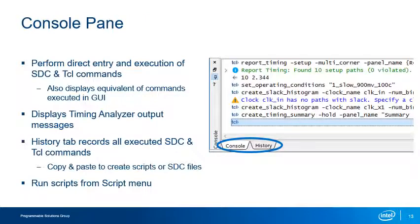The Console pane, found at the bottom of the Timing Analyzer window, allows you to directly enter and execute SDC or TCL commands. Note that SDC constraints entered here do not automatically get stored in a .sdc file and will be lost if you quit without saving. If you use the GUI to enter commands, the Console pane will display the equivalent command or constraint. With the History tab, you can see a record of all executed commands and easily copy and paste to create TCL scripts or .sdc files.